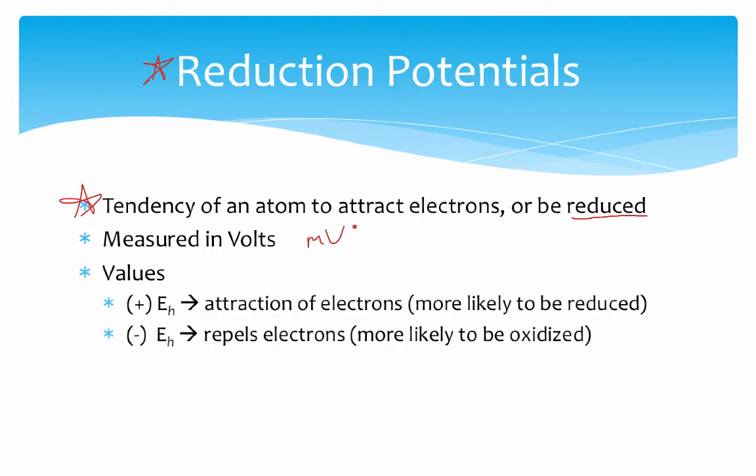And there are values we can have for that. The symbol we typically use for our reduction potentials is this E sub H value. If those E sub H values are positive, this means an attraction on electrons, and that means your substance is more likely to be reduced or it is a better oxidizing agent. And if the reduction potential is negative, that means this substance repels electrons. It's more likely to be oxidized or lose them, meaning it's a better reducing agent. So the magnitude of the number and the sign gives us an idea of whether it will be oxidized or reduced and how good it is at doing that.